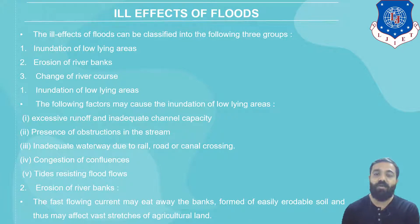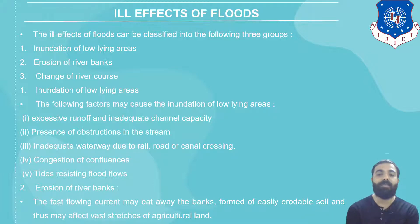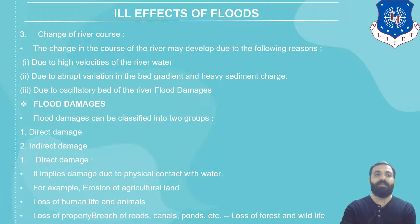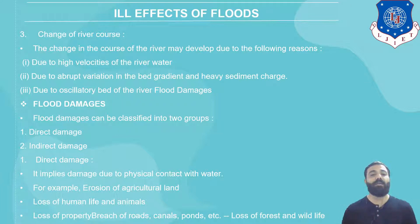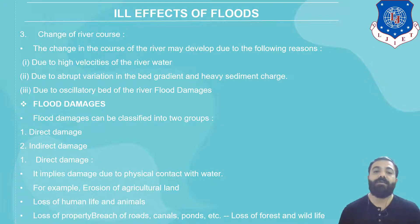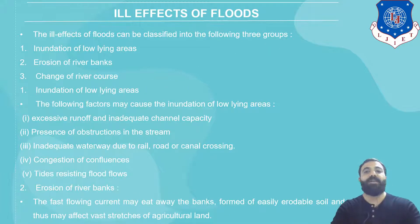Second, erosion of river banks. During floods, the discharge and velocity of water in the river is very high, so the current erodes the banks. This affects stretches of agricultural land as well. Third, change of river course. The change in river course may develop due to high velocity, abrupt variations, bad gradient, heavy sediment load, and oscillatory movement of the river during flood damage.